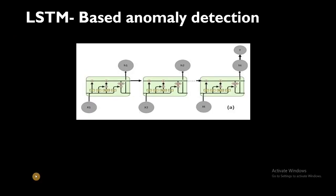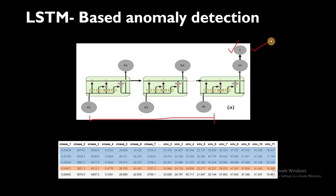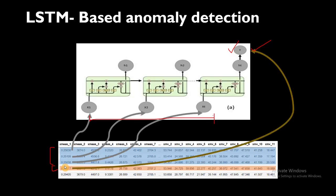This is the LSTM-based anomaly detection structure we are going to follow, where we have multiple inputs — one, two, three — and finally we have the output. We will give it input data from t minus one instances and we want to predict the t-th instant. This is also called the autoregressive task. We are going to train this neural network only on the normal or fault-free data.